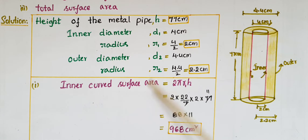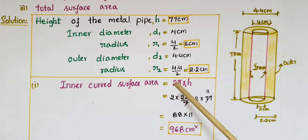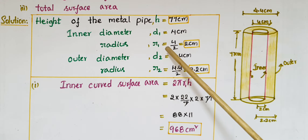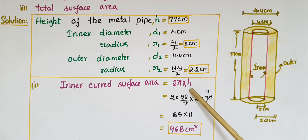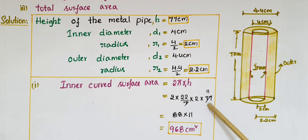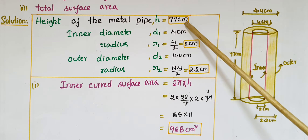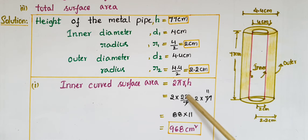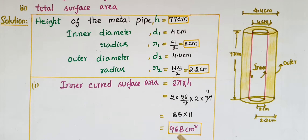First, we have to find the inner curved surface area. Since the pipe is in the form of a right circular cylinder, the inner curved surface area equals 2 pi r1 h. Substituting: 2 into 22/7 into r1 = 2 into h = 77. The 7s cancel, giving 2 into 2 = 4, then 4 into 22 = 88, and 88 into 11 = 968 centimeters squared.